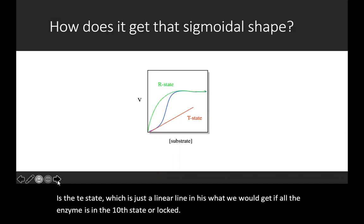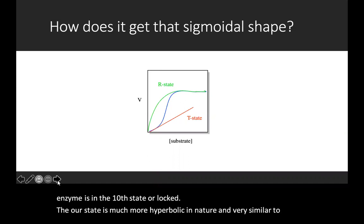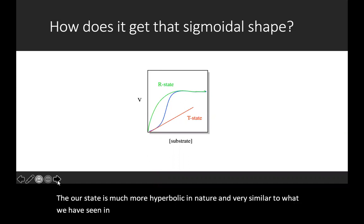The R state is much more hyperbolic in nature and very similar to what we have seen in our normal Michaelis-Menten kinetics. The center, or the blue graph, is a combination of the two.